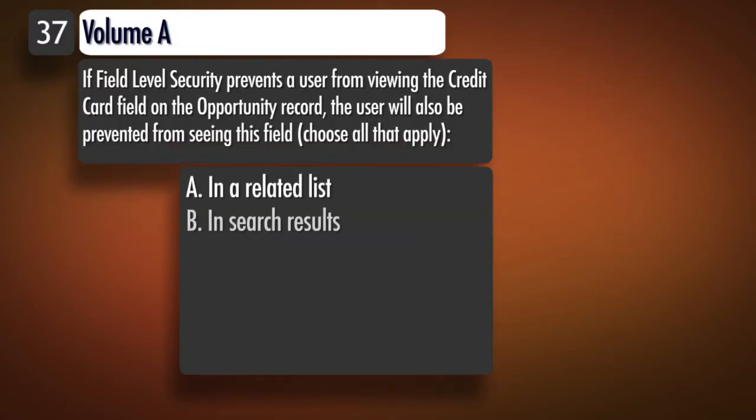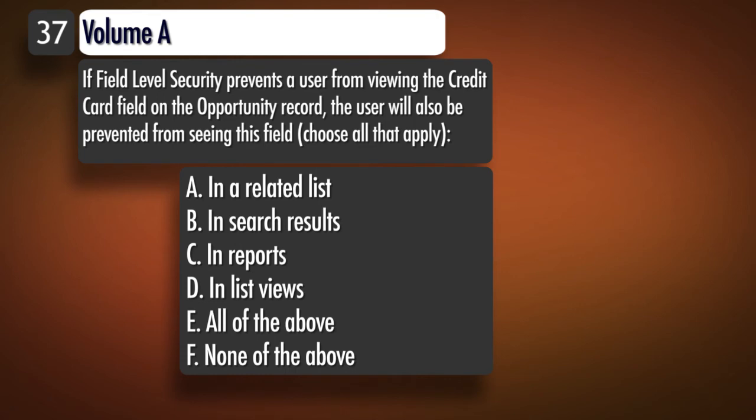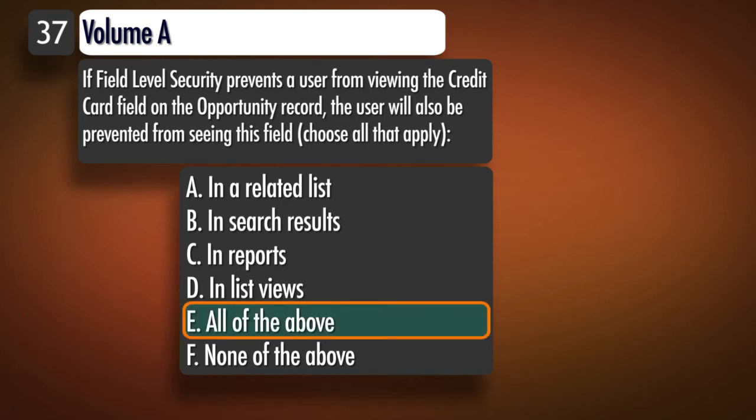Question 37, Topic 1: If field level security prevents a user from viewing the credit card field on the opportunity record, the user will also be prevented from seeing this field — choose all that apply. A. In a related list. B. In search results. C. In reports. D. In list views. E. All of the above. F. None of the above. Correct answer: E.